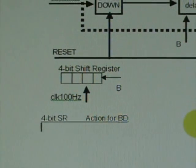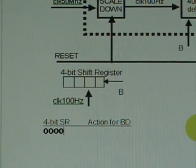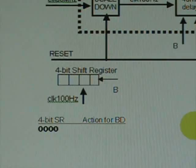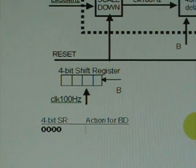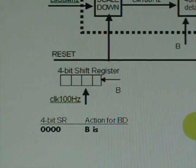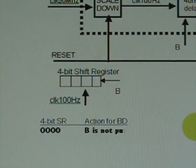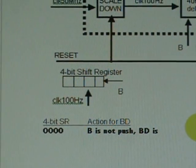If the content of the four-bit remain zero, then B is not pushed. BD is considered low.